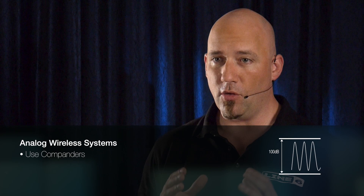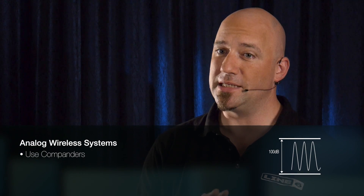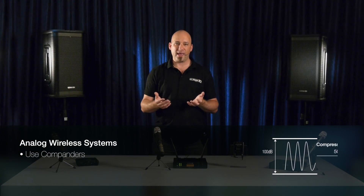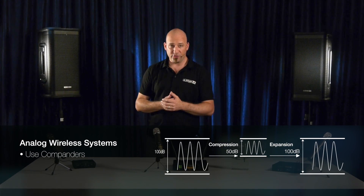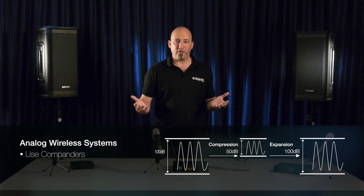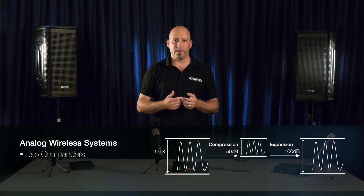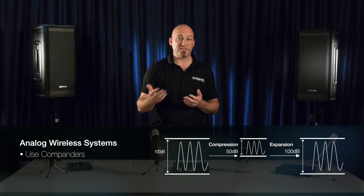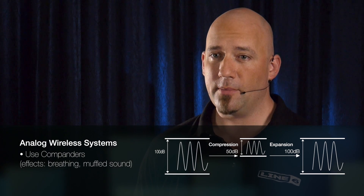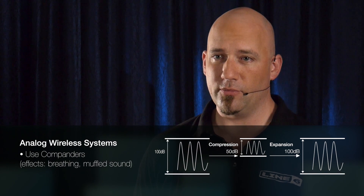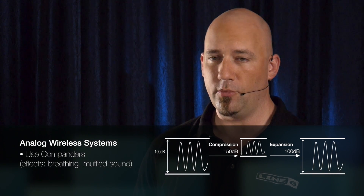Analog wireless systems must use companders in order to fit the audio signal's dynamic range inside the system's limited bandwidth. Companding is the compressing and expanding of the audio signal. Side effects of companding may include a muffled sound and obscured harmonics, and gain changes can become audible, creating a sound often called breathing.